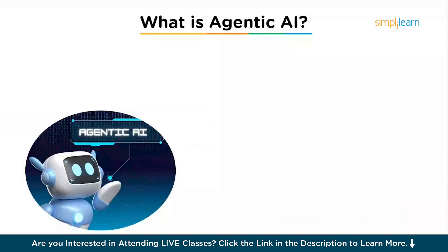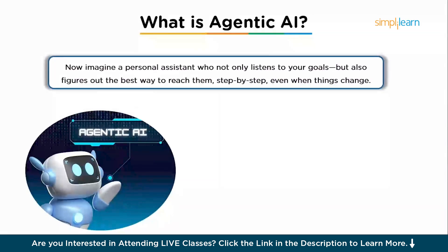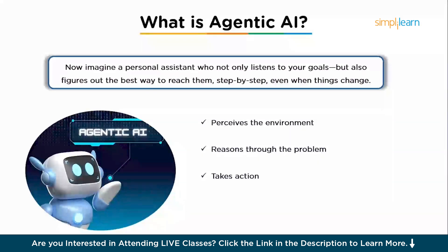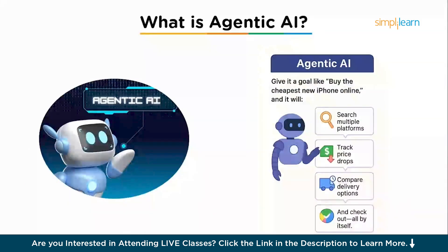Now let's understand agentic AI and how it differs from generative AI. Imagine a personal assistant who not only listens to your goals but figures out the best way to reach them step by step, even when things change. Unlike generative AI, agentic AI is proactive — not reactive. It starts with a goal, perceives the environment, reasons through the problem, takes action, learns from the result, and repeats the cycle just like a human would. For example, tell it 'buy me the cheapest new iPhone online' and it will search multiple platforms, track price drops, compare delivery options and check out all by itself. Think self-driving cars, smart robots in warehouses, or a smart home managing your energy use.